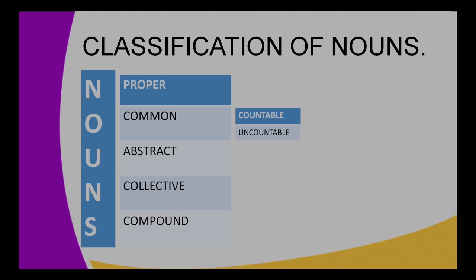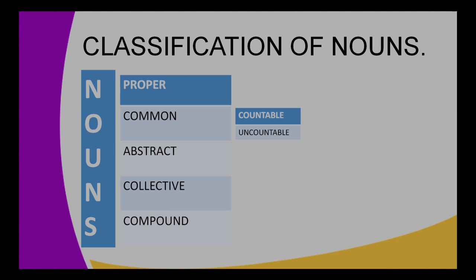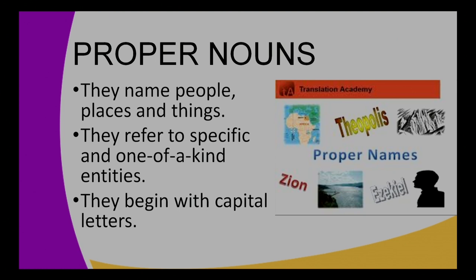Now let's move on and talk about classification of nouns. Nouns are classified into five categories: proper nouns, common nouns, abstract nouns, collective nouns, and compound nouns. Note that common nouns can be divided into two — countable nouns and uncountable nouns. We will look at that as we proceed.